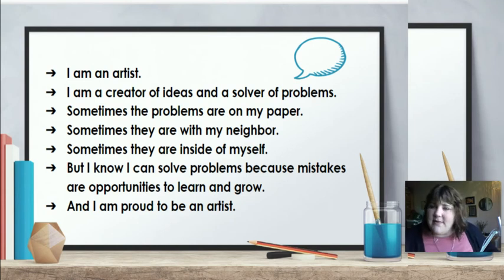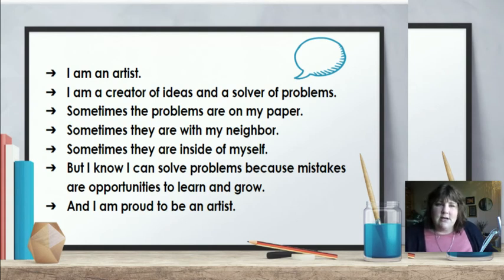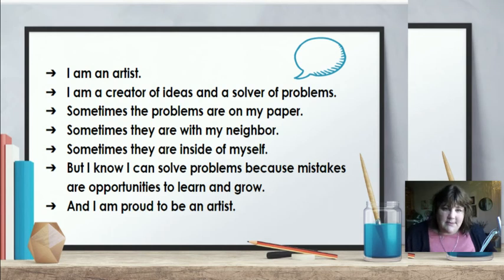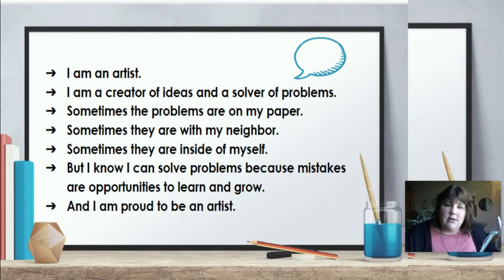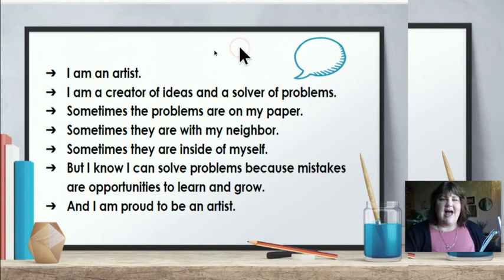Let's get started. Remember, this is repeat after me — I will say a line and then you say it. It's okay to say it out loud, but if you can't, say it silently in your head. Here we go: I am an artist. I am a creator of ideas and a solver of problems. Sometimes the problems are on my paper. Sometimes they are with my neighbor. Sometimes they are inside of myself. But I know I can solve problems, because mistakes are opportunities to learn and grow, and I am proud to be an artist.